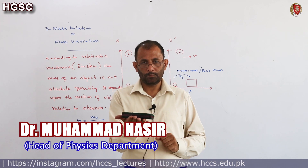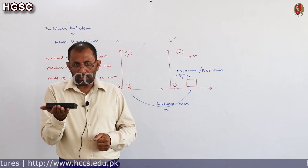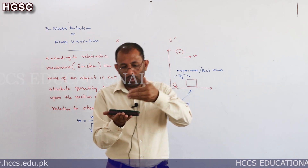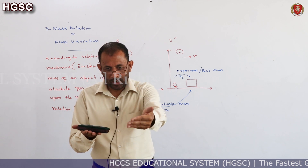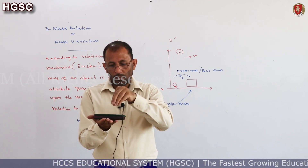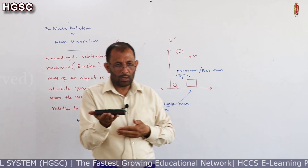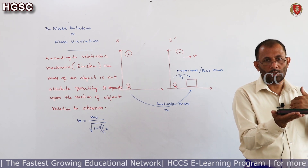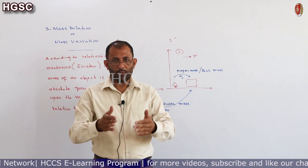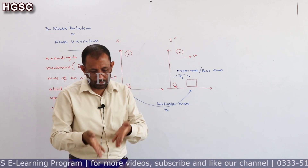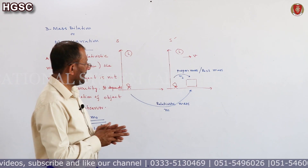اس کو یوں سمجھ سکتے ہیں: سپوز یہ ایک body ہے جو میری frame میں ہے۔ میں جو اس کی mass measure کر رہا ہوں، یہ اس کی proper mass ہے جسے ہم m₀ سے denote کرتے ہیں۔ اگر یہ object move کرے اور میں بھی اسی کے ساتھ move کروں، تو پھر بھی میں جو mass measure کروں گا وہ proper mass ہے۔ لیکن اگر میں object کے relative move کر رہا ہوں with respect to you, تو جو میں measure کروں گا وہ proper mass ہوگی مگر جو آپ measure کریں گے وہ relativistic mass ہوگی۔ آئنسٹائن کہتا ہے کہ proper mass اور relativistic mass برابر نہیں ہوتی — mass velocity کے ساتھ increase کرتی ہے۔